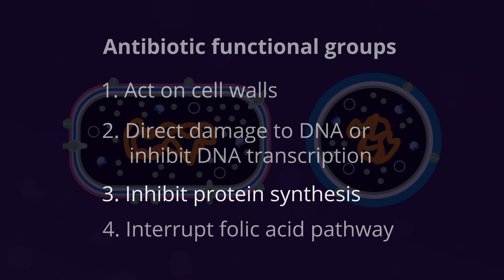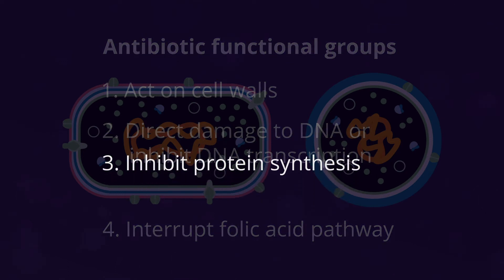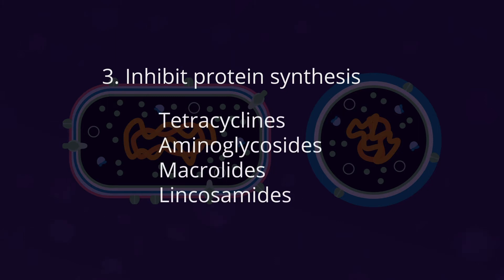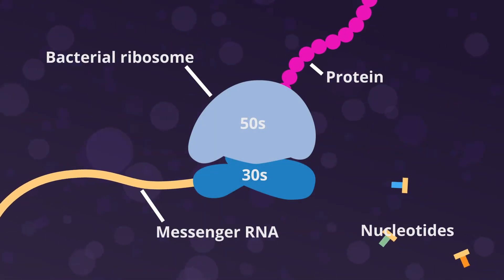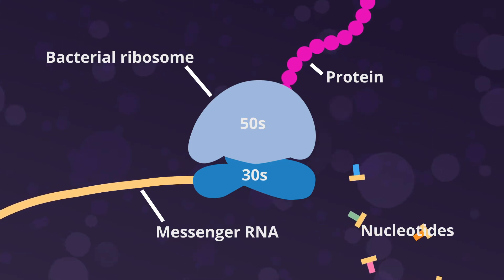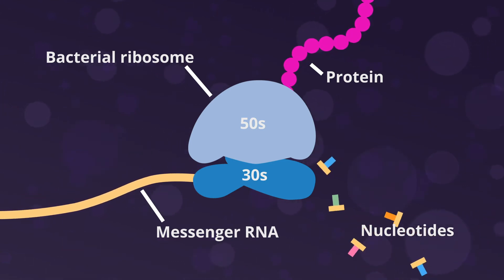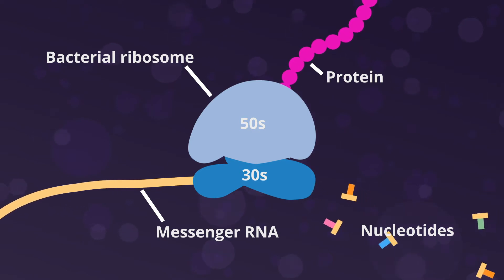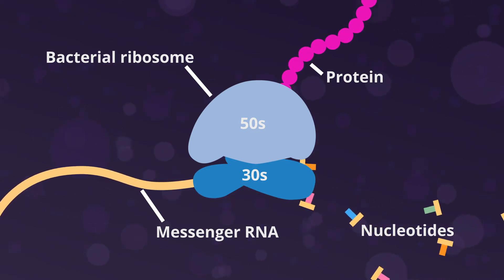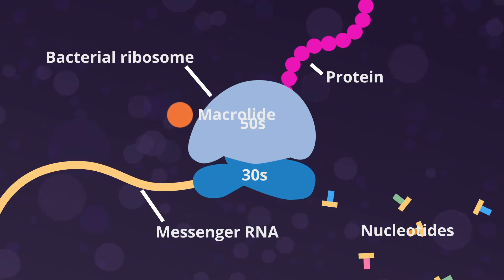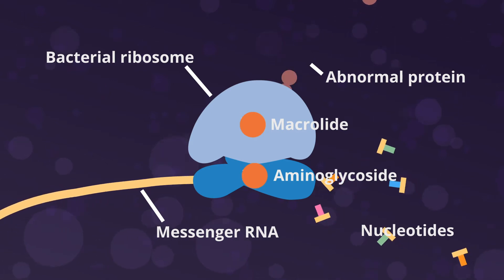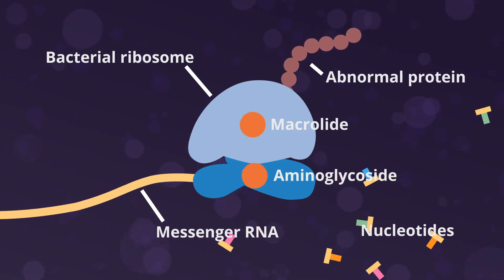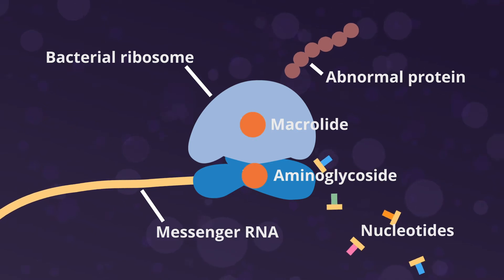Next, we've got the antibiotics that interrupt or inhibit protein synthesis, also known as translation. There are a number of different classes in this category, all of which act on bacterial ribosomes. Bacterial ribosomes have two functional subunits: the 30S subunit, where mRNA is decoded, and the 50S subunit, where amino acids are sequenced into chains to make proteins. Antibiotics that disrupt normal protein synthesis result either in direct cell death or non-viable replication, depending on the specific agent, bacteria, and dose.